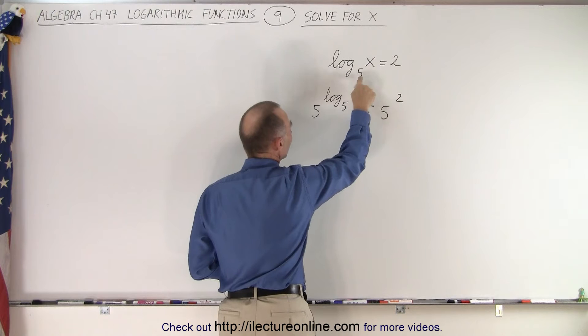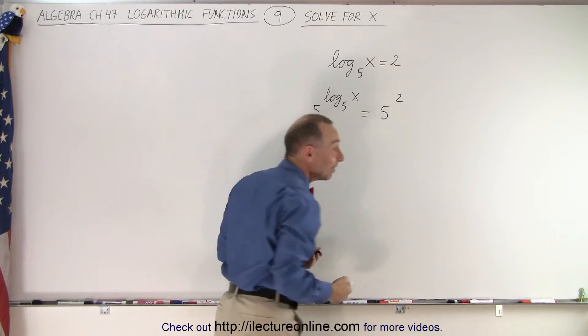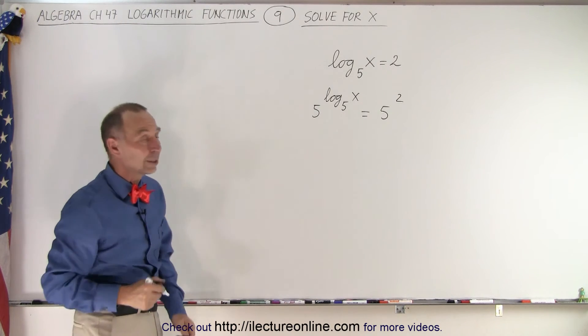So if the log base 5 of x equals 2, then certainly we can use them with exponents of the same base and that equation will still be correct. The left side will still equal the right side.